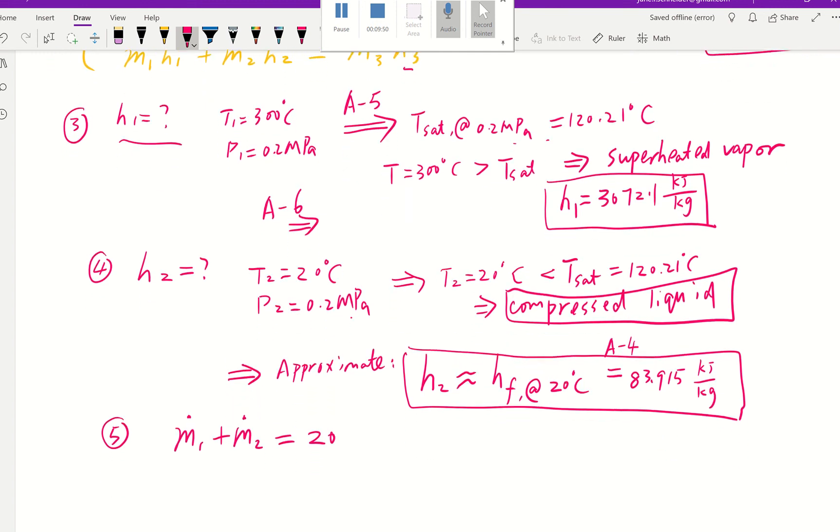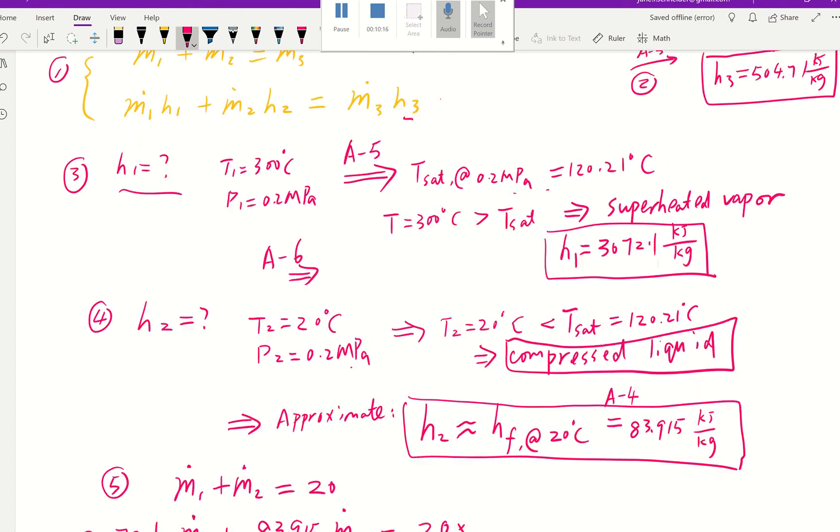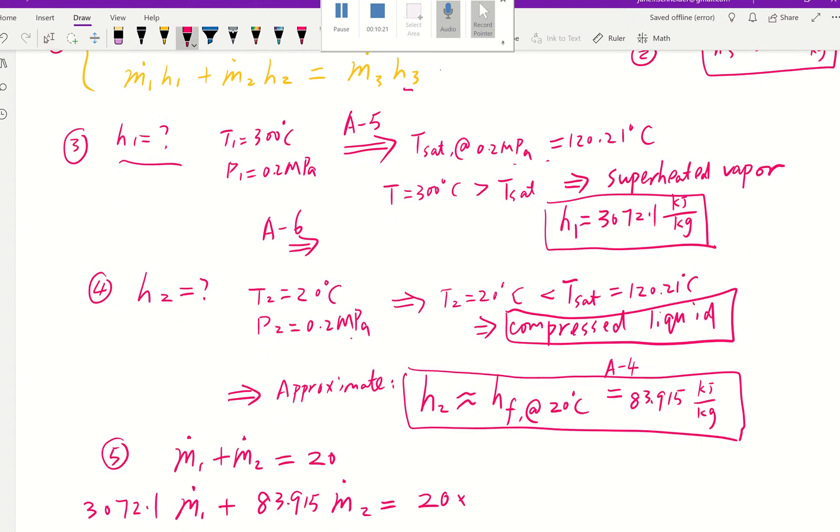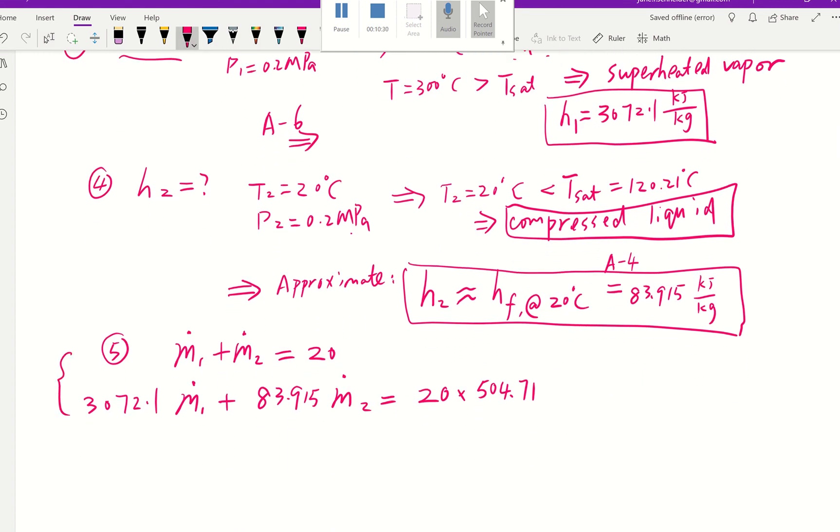Then the second equation we will have ṁ₁ × h₁, h₁ is 3072.1, plus ṁ₂ × h₂, h₂ is 83.915, equals ṁ₃, that's given as 20, times our h₃, h₃ is 504.71.